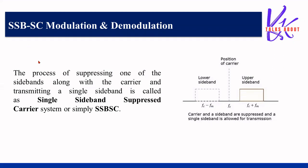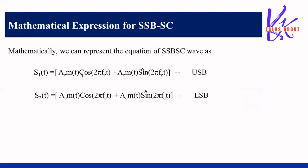Mathematically, the SSB upper sideband is represented as: s1(t) = Ac·m(t)·cos(2πfct) − Ac·m̂(t)·sin(2πfct), and the lower sideband as: s2(t) = Ac·m(t)·cos(2πfct) + Ac·m̂(t)·sin(2πfct), where m̂(t) is the Hilbert transform of the message signal. If we can generate these expressions, we can transmit either the upper or lower sideband.